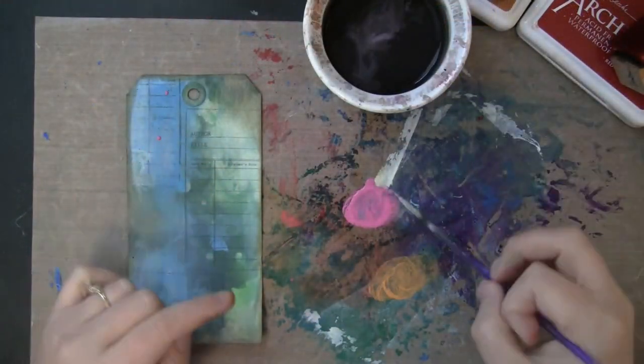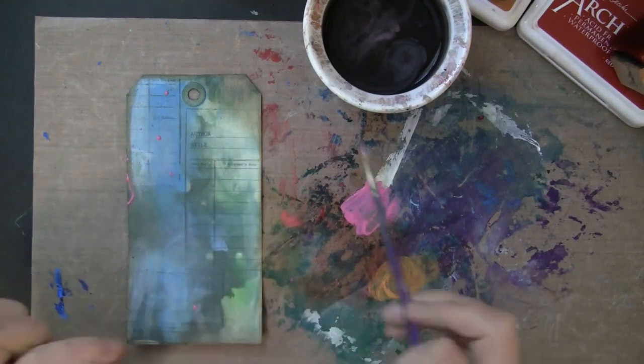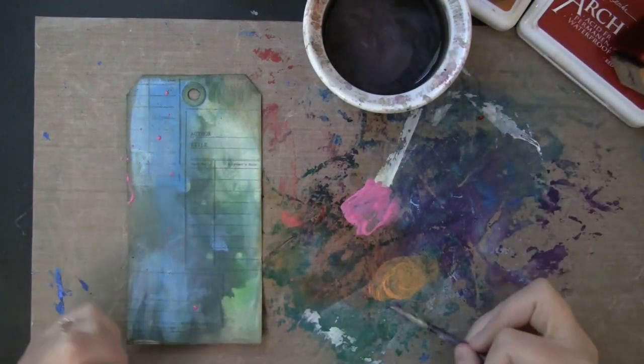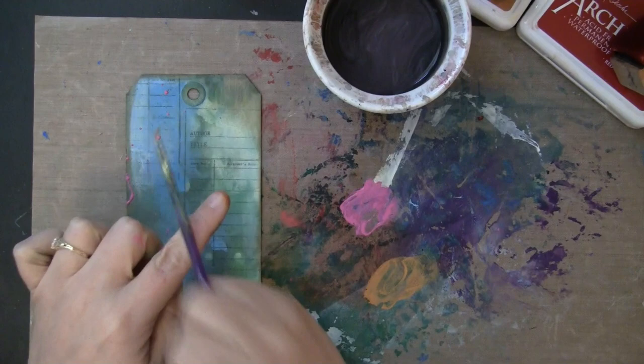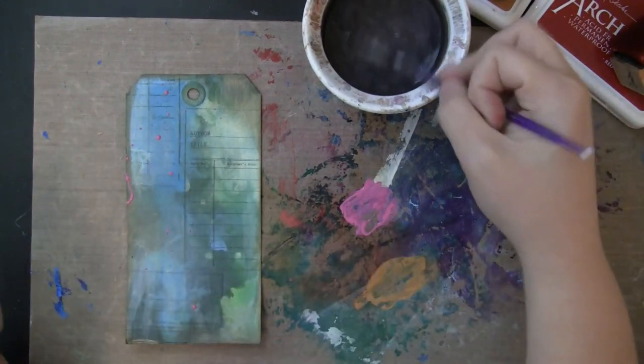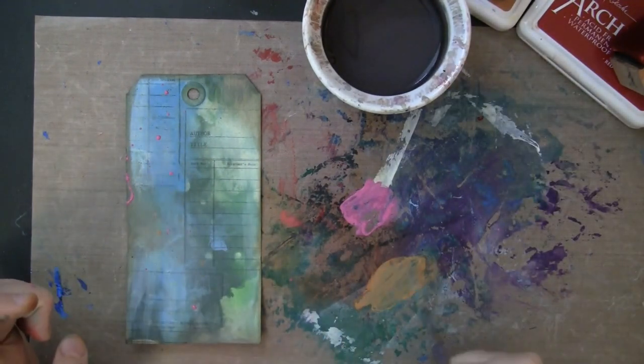Now I wanted to tie in the color of those leaves onto the background, so this is just that Picked Raspberry Distress paint, and also the Spice Marmalade. I added some water with a brush, and then flicked it onto the background.